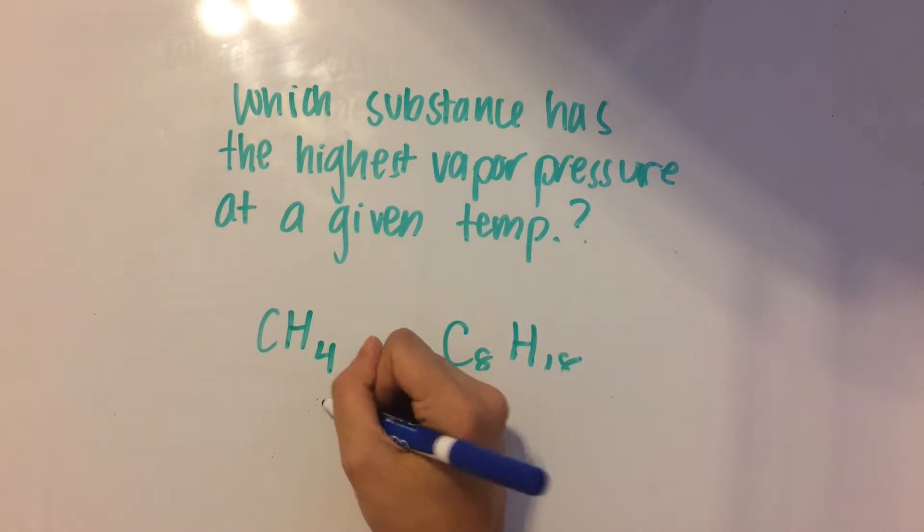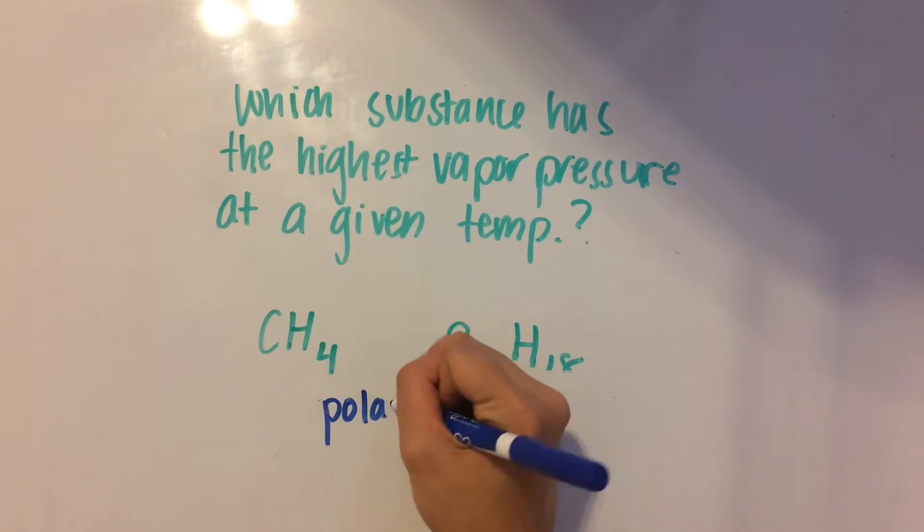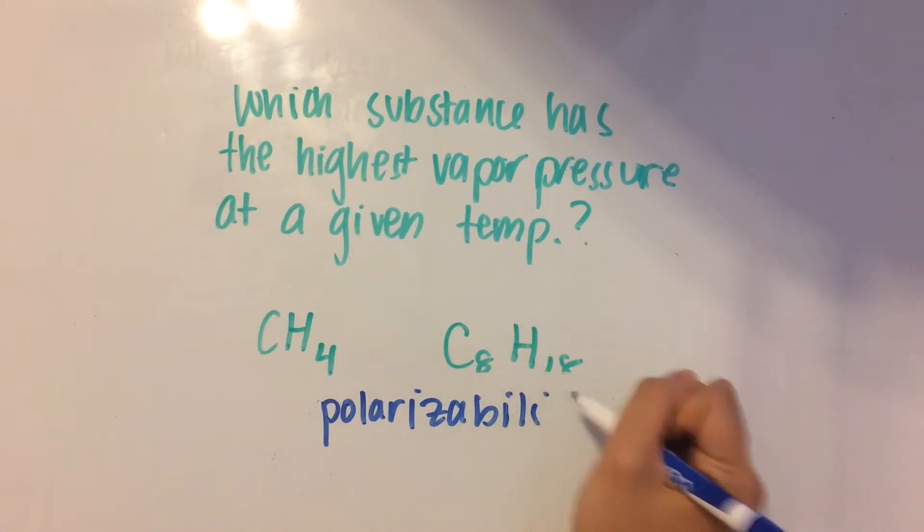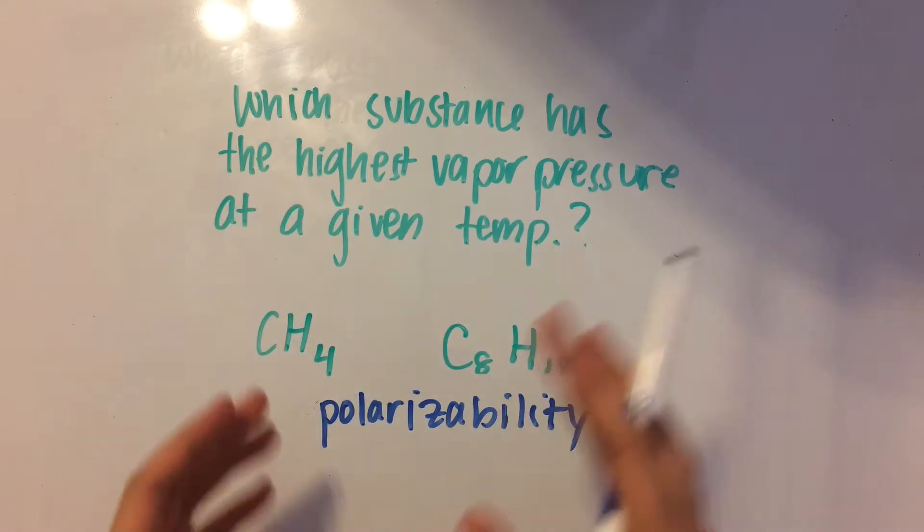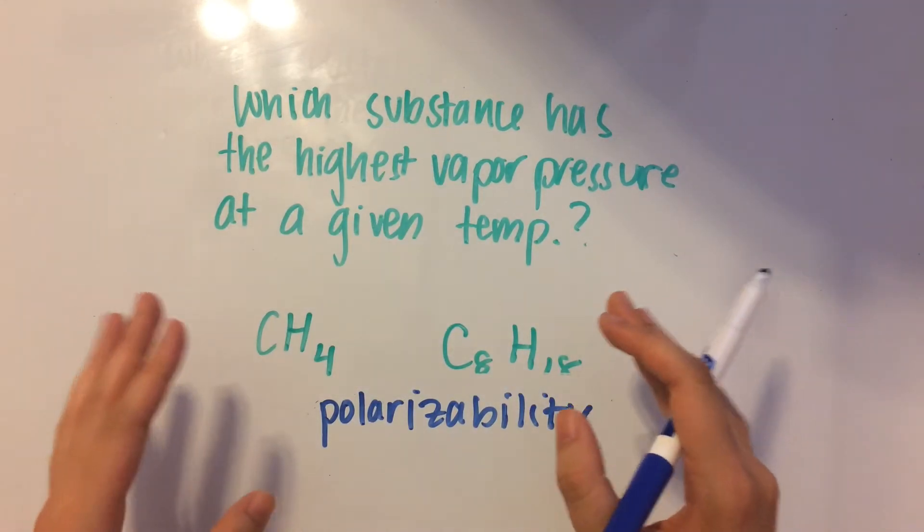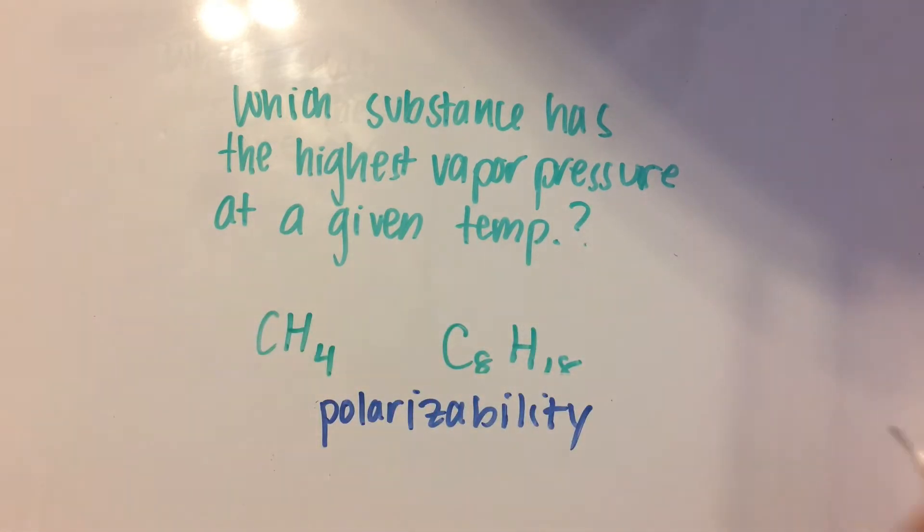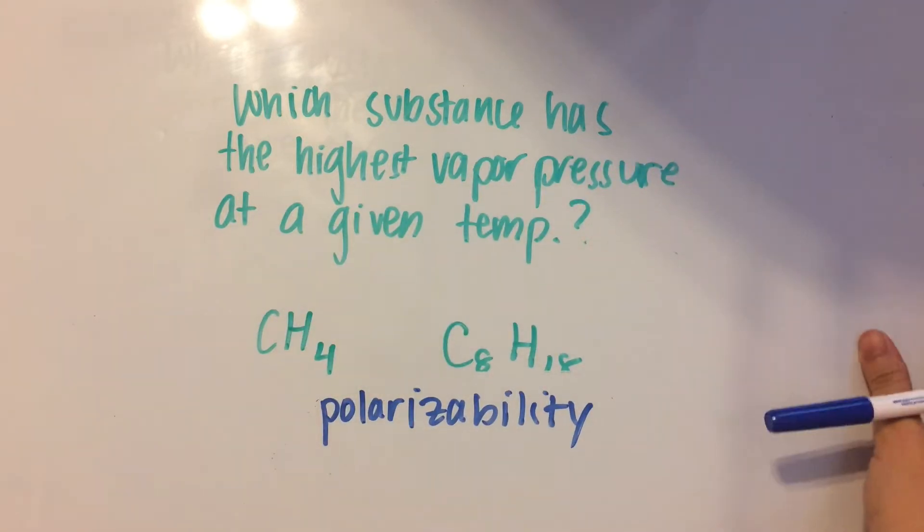This time, we have to look at something called polarizability. Polarizability is basically how easy it is for a molecule to be induced into a dipole. So the bigger the electron cloud of a molecule, the higher its polarizability.